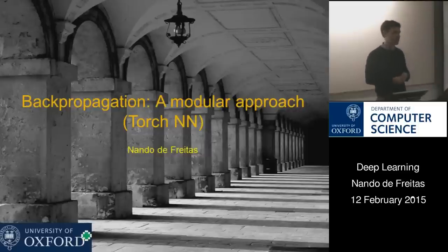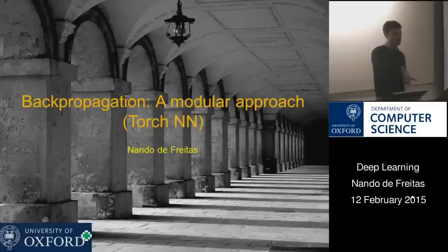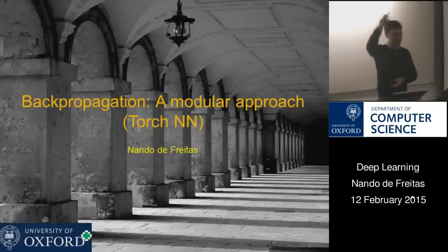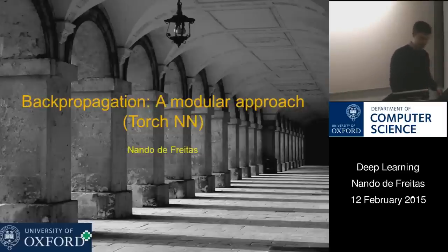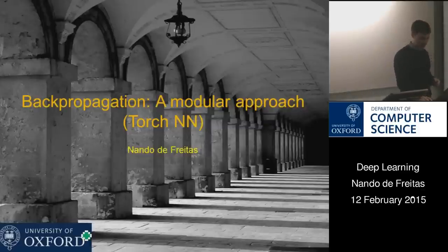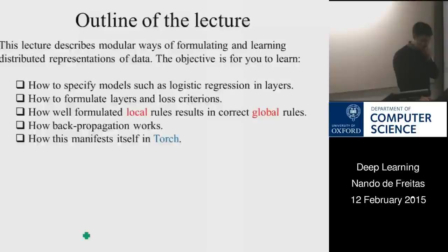Provided we have the right protocol for passing messages forward and passing derivative messages backward, we'll always be able to do local computation and get globally consistent computation — we'll get the right derivatives throughout the network. Once we have all the derivatives, we call SGD: theta equals theta minus alpha times the gradient, and you repeat that for however many iterations you need. That's the idea — going from local to global consistency — and we're going to implement this in Torch.